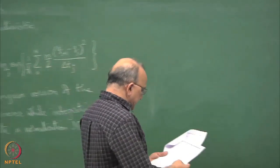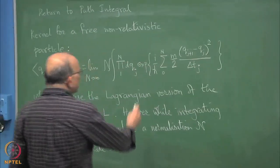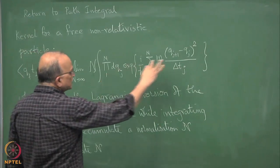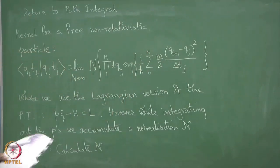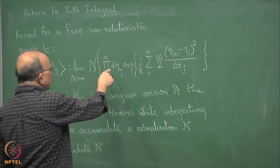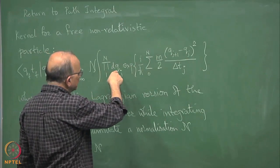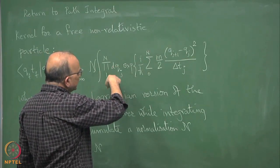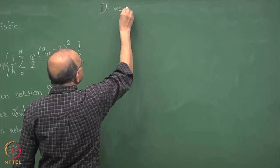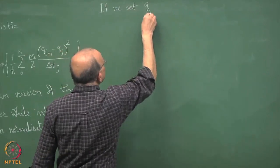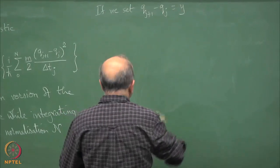Now what we are going to do — this looks somewhat easy to do because instead of q, I should use differences of q, then it is just of a Gaussian form. So suppose it is q_{j+1} minus q_j as the integration variable, then it is integral dy e raised to y_j, etc.